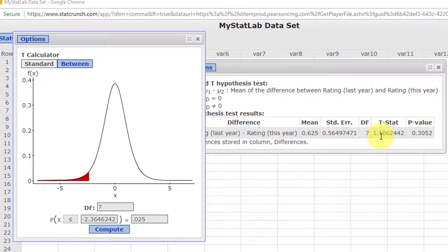And again, because our test statistic is 1.1, which is somewhere in here, it's definitely not in either one of the rejection zones. Therefore, again, it is failed to reject the null hypothesis, failed to support the claim that the mean differences are different.